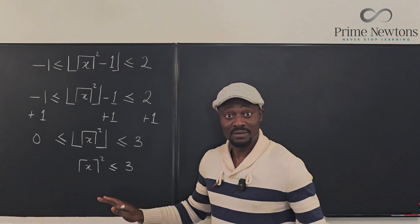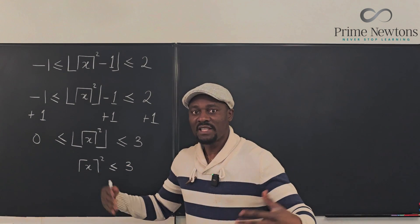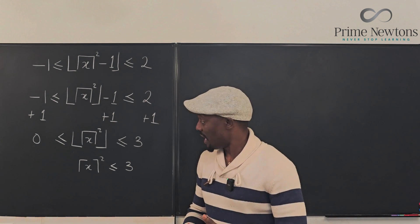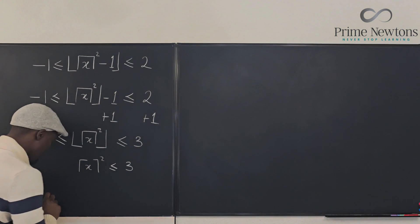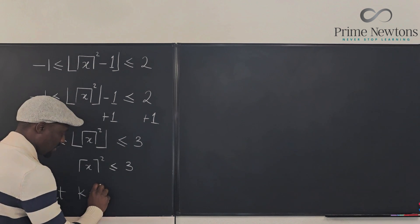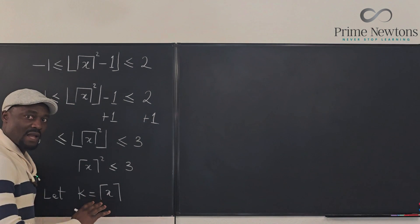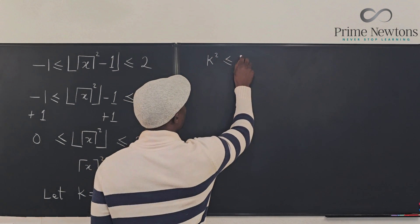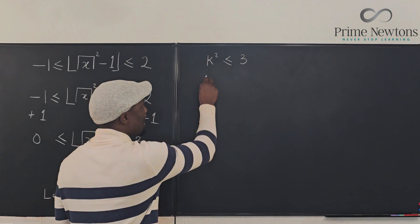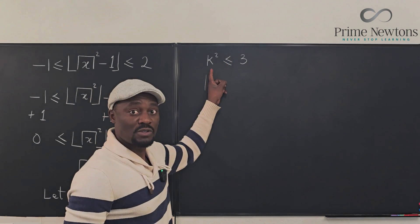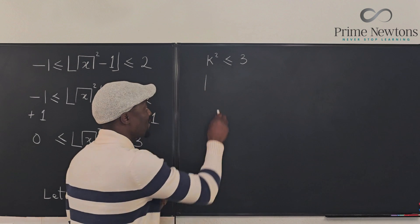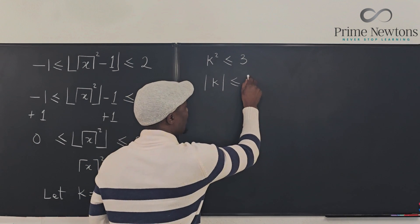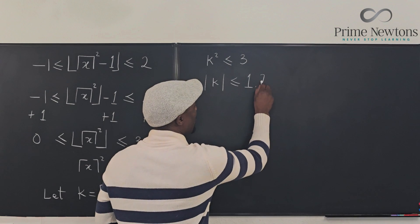To avoid writing the ceiling of x repeatedly, let's substitute: let k equal the ceiling of x. So we now have k squared is less than or equal to three. Taking the square root of both sides — remembering that the square root of k squared is the absolute value of k — we get the absolute value of k is less than or equal to the square root of three, which is approximately 1.732.